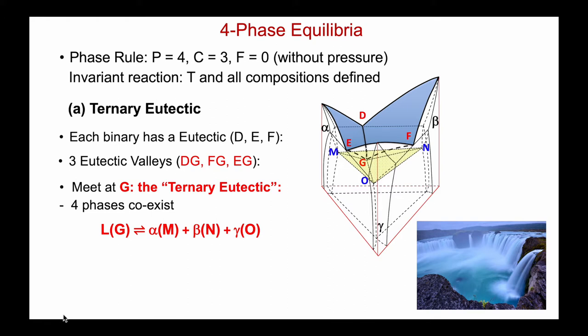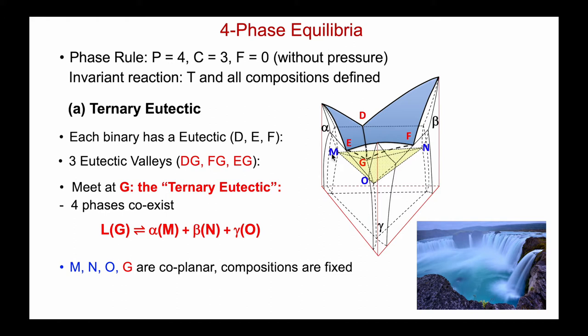The four phases coexist, and the equilibrium is liquid in equilibrium with alpha plus beta plus gamma. If I'm cooling, I'm going from left to right. In this case, all of these are at the same temperature — M, N, O, and G in the middle. They're all coplanar; it's a planar triangle.